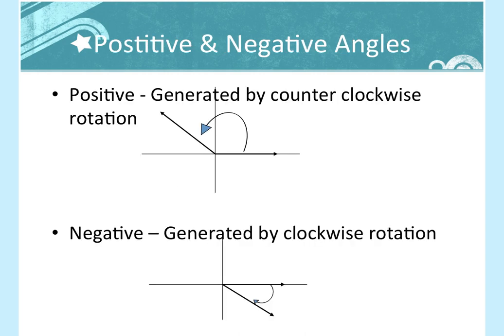There are two types of angles: positive and negative. Positive angles are generated by going counterclockwise — the opposite direction the hands on a clock go. The negative angle goes clockwise, the other direction.